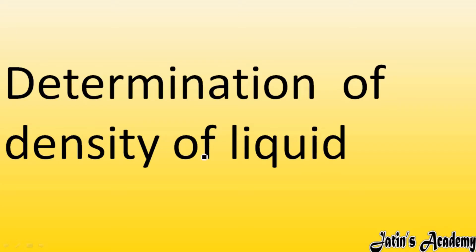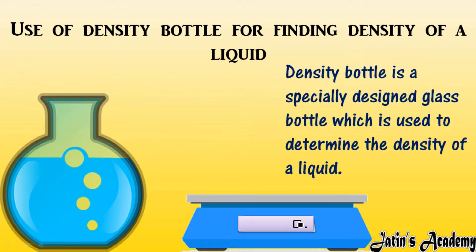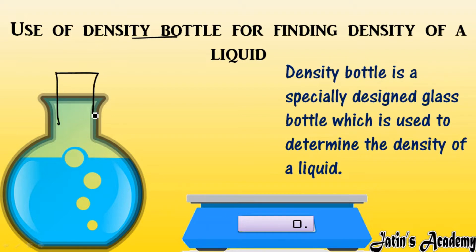We are going to discuss the density of liquid. In order to measure the density of liquid, one main and accurate method is the density bottle. The density bottle is a specially designed bottle used to determine the density of liquid. It has a glass stopper, and in the glass stopper there is a capillary tube. I am going to discuss the function of this glass stopper and capillary tube.